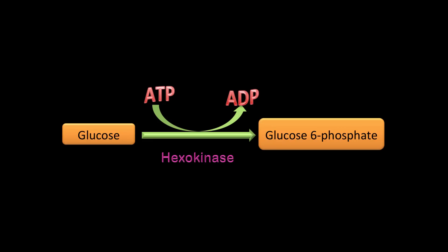Hexokinase — can you remember what major class of enzymes any kinase belongs to? That's right, they belong to the major class of transferase enzymes. What a kinase does is take the terminal phosphoryl group of ATP and add it to the substrate, which in this case is glucose, to form glucose-6-phosphate.